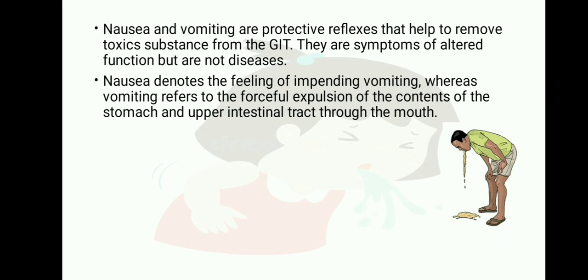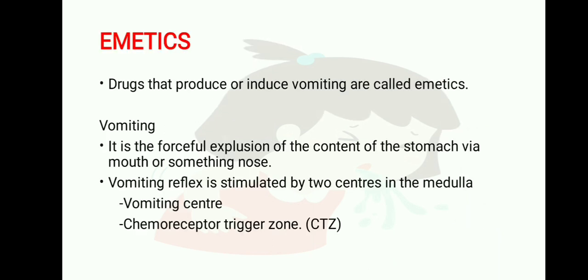Nausea and vomiting are protective reflexes — when any person ingests toxic substances, they help to remove them from the stomach. Drugs that produce or induce vomiting are called emetics. Emetics are drugs which are used to induce vomiting and are generally used in cases of poisoning.